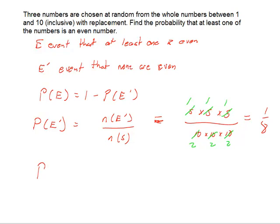So the answer to my original question, using the complement, find the probability of E, is one minus the probability of E complement, or we got a seven out of eight chance of selecting a ball and having at least one of these being an even number.